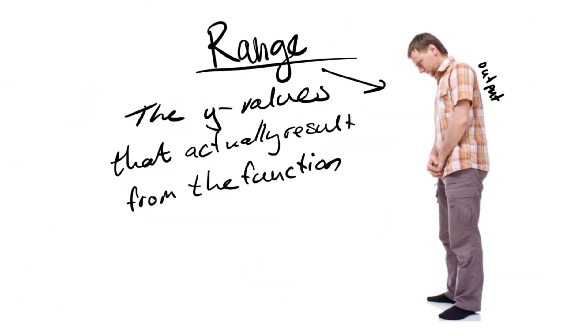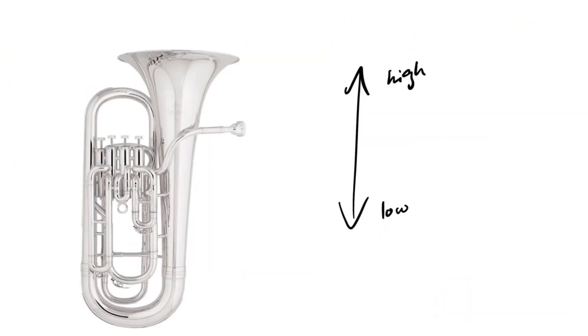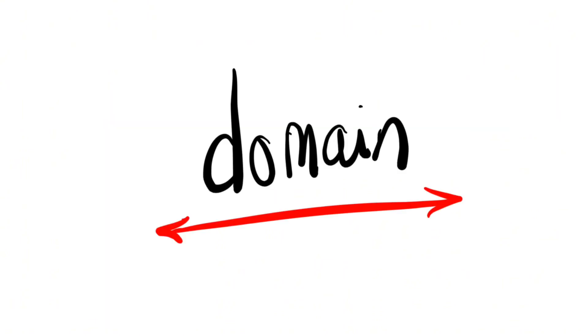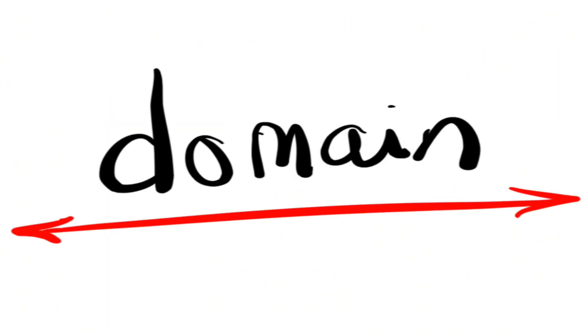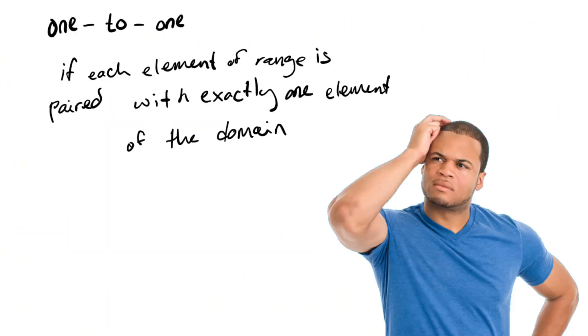The range, or output, is the y values that actually result from the function. I remember range like a musical range, since you can go high to low. Domain is the longer word, so I associate it with the x-axis.